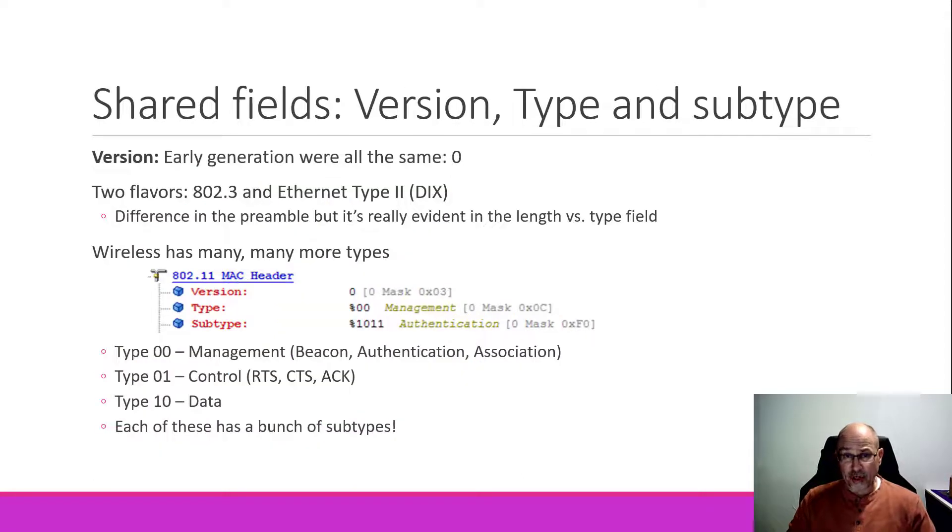To start off our shared fields, we have the version, type, and subtype. We're talking about the first standard that came out. So in the early generation, all of the versions would be the same. They're all going to be set to zero.